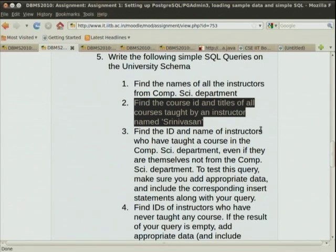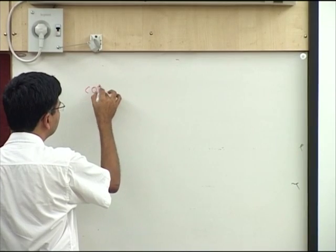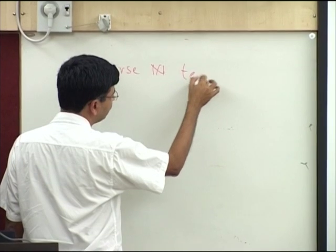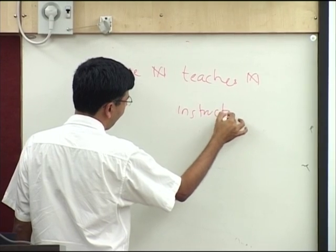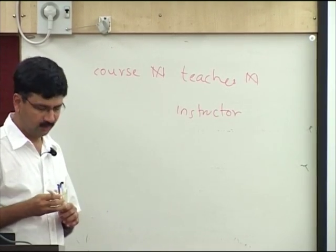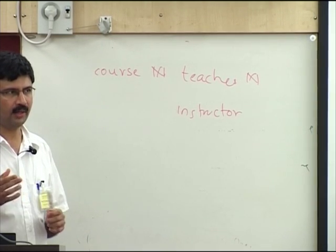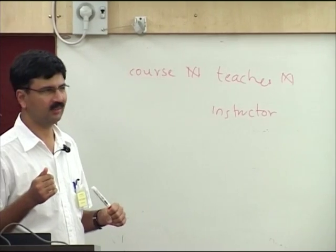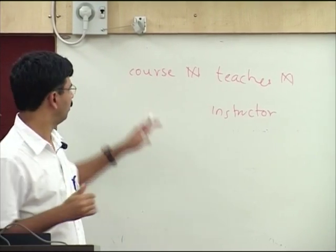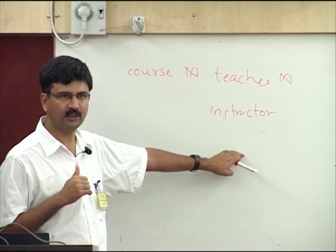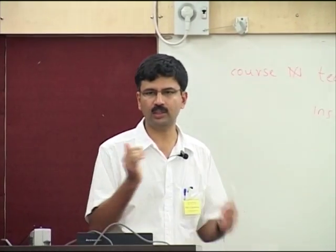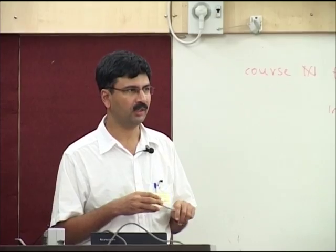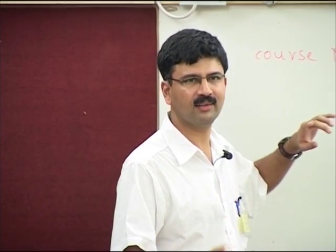Supposing we do natural join: course natural join teachers natural join instructor. If you run this query, it will more or less work. You can write it in SQL as: select course_id, title from course natural join teachers natural join instructor. There is one small glitch though which you have to watch out for whenever you use natural joins — natural joins are going to equate any columns with the same name.